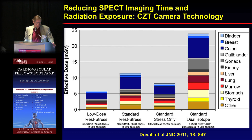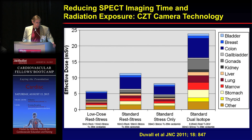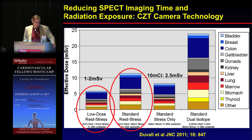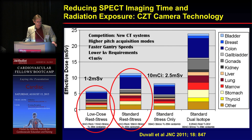Standard stress-rest imaging is about 12 to 14 millisieverts. By using these new crystals and imaging systems, we can get down to about five to six millisieverts. And if we do stress-only imaging — do the stress study first and, if perfusion is normal, skip the rest study — we can get down to one to two millisieverts. That competes very nicely with CT systems, which can give down to one millisievert of radiation depending on the system used.